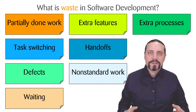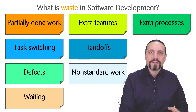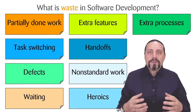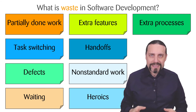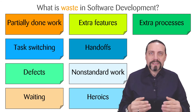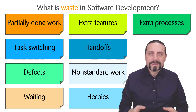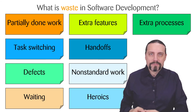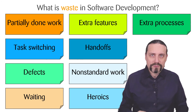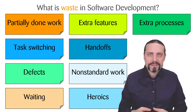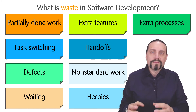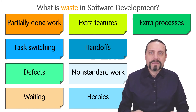The last type of waste is heroics. We always have that hero in the project who can solve everything. But the problem is that we don't invest in automating what they fix, and we don't invest in fixing the root cause of the problem. Always focus on automating and fixing the root cause rather than relying on heroics.